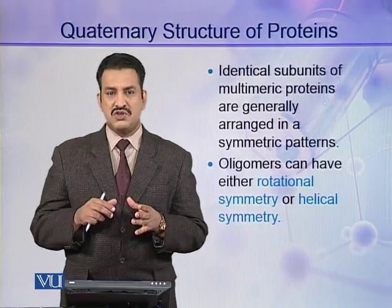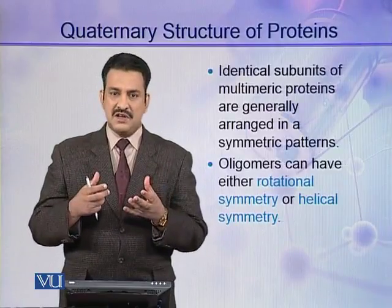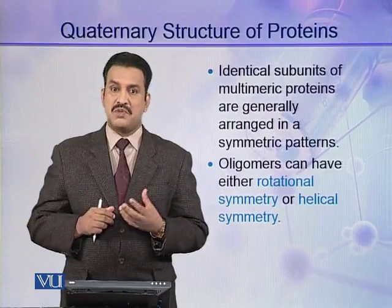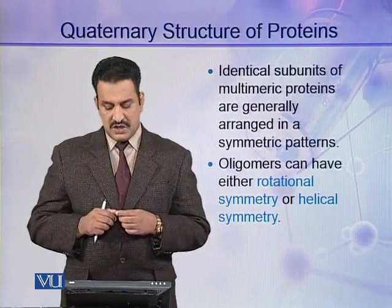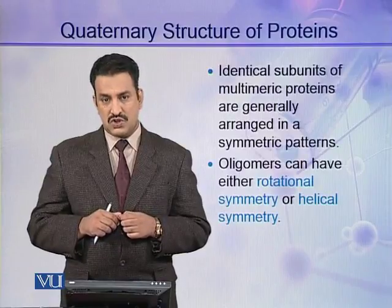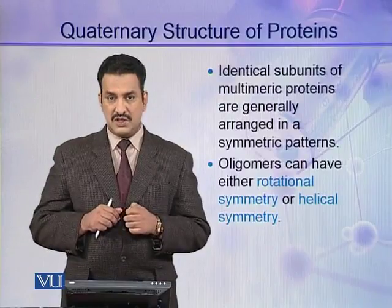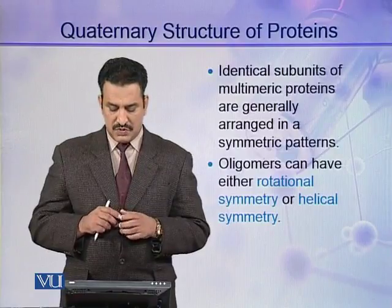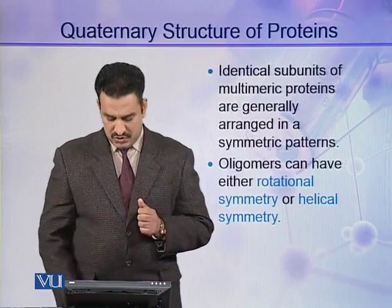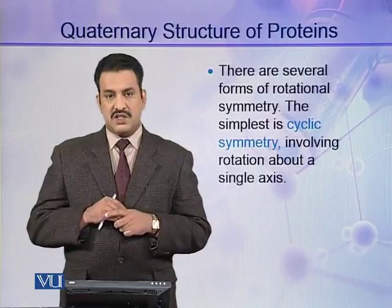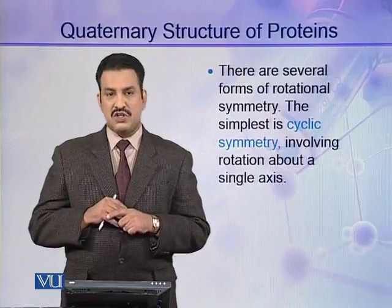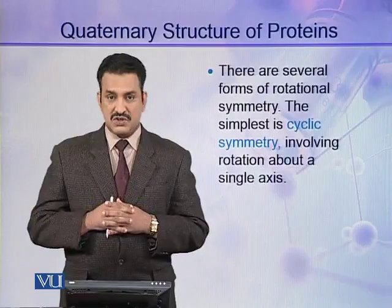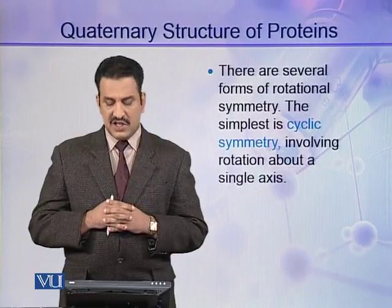They are not arranged roughly; rather, they have very regular symmetric patterns. Mainly two symmetries are present in proteins: rotational symmetry and helical symmetry. There are several forms of rotational symmetry, and the simplest rotational symmetry is cyclic symmetry.